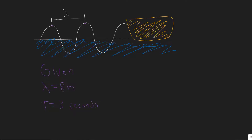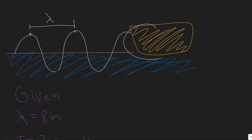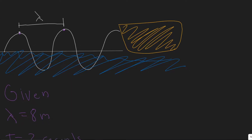In this problem, we're told a fisherman notices that wave crests pass the bow of his anchored boat every three seconds. He measures the distance between the two crests to be eight meters. How fast are the waves traveling? We can imagine this is his boat, and these are the waves that are passing by his boat that he's going to see.